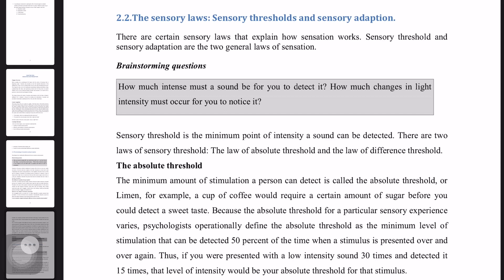The minimum amount of stimulation a person can detect is called the absolute threshold. Stimulus and energy are both tied to the absolute threshold. A cup of coffee could require a certain amount of sugar before you could detect a sweet taste. If you experience a sweet taste, your improvements are in the same place for the first taste.